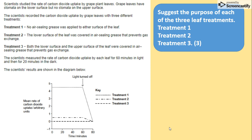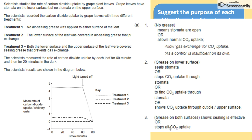Let's first see. Treatment number one: there is no sealing on any of the surfaces of the leaf, so gas exchange can be taking place as normal - it's our control. Treatment number two: the lower surface is covered, so gas exchange is not going to be taking place through the lower surface, but still some small amount can be taking place through the upper surface. Finally, treatment three: both were covered, so of course there will be no gas exchange.